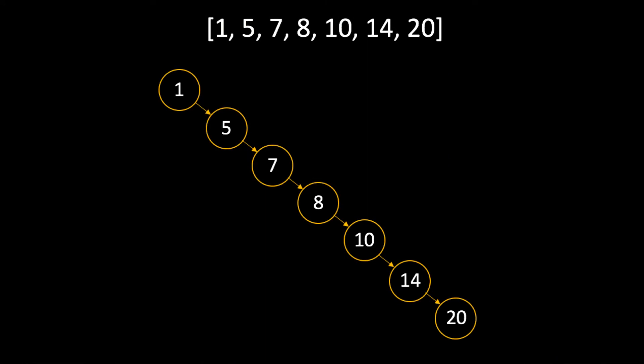Notice how this tree only has a right-hand side. This doesn't even really look like a tree. However, technically this tree's right-hand side is six leaves taller than the left-hand side. Consequently, this tree is unbalanced.